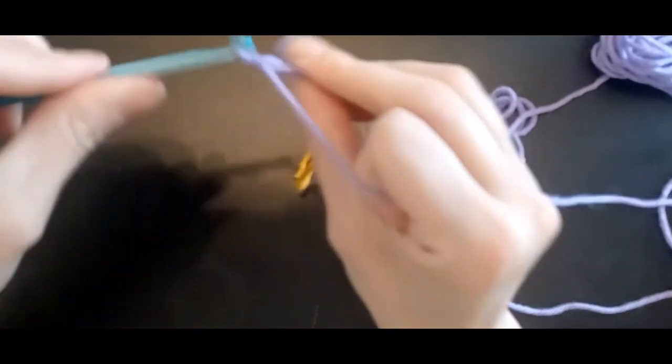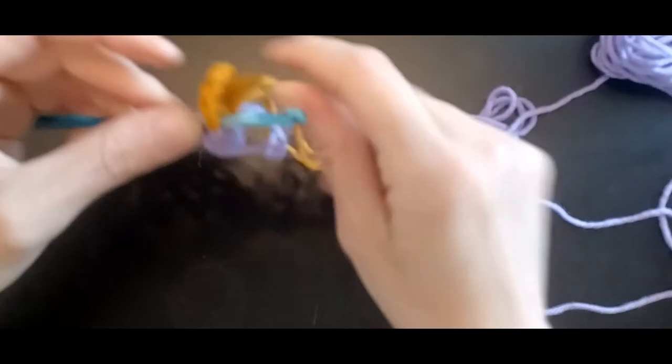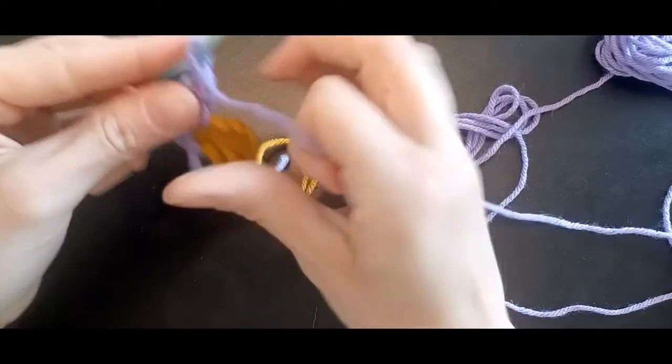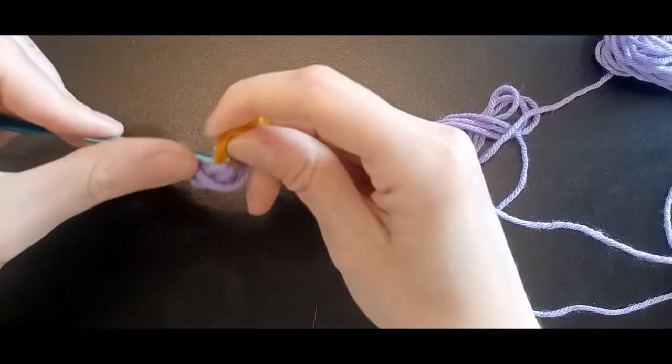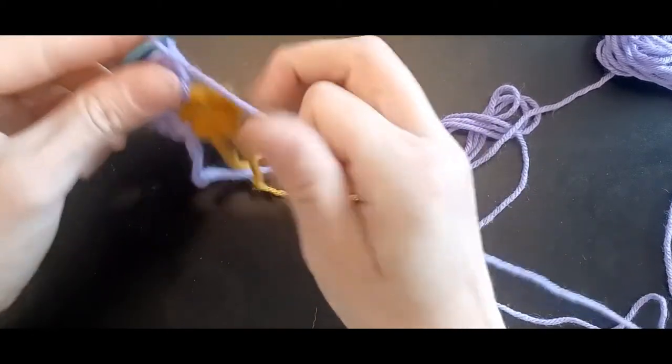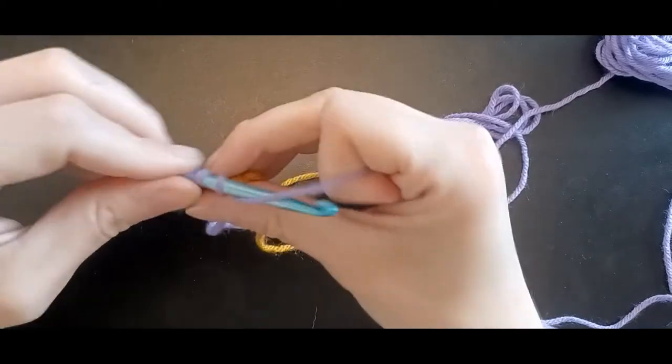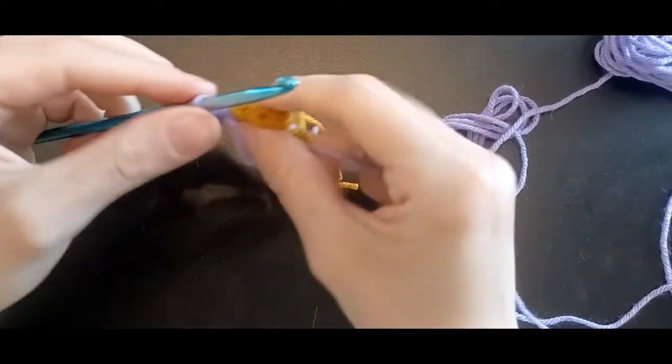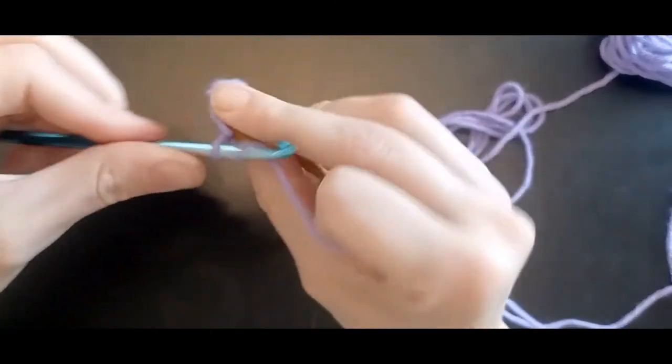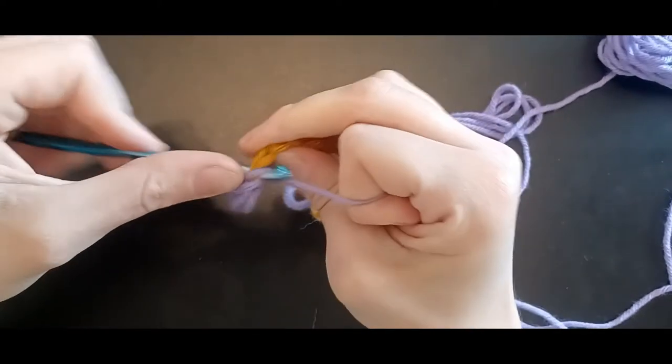And then chain two again and do two double crochets. So yarn over, through, pull up, through two, through two. And you do it again all in one spot on that same space. Then a half double to the next, and slip into your new one.